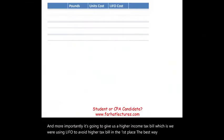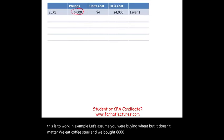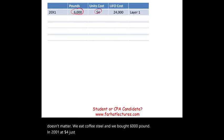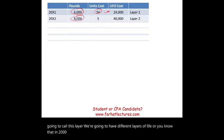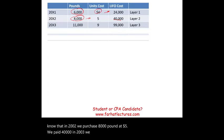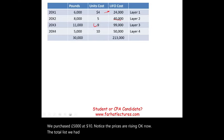The best way to illustrate this is with an example. Let's say we're buying wheat. We bought 6,000 pounds in 2001 at $4, giving a LIFO cost of $24,000 — Layer 1. In 2002, we purchased 8,000 pounds at $5, totaling $40,000. In 2003, 11,000 pounds at $9. In 2004, 5,000 pounds at $10. Notice prices are rising. In total, we have 30,000 pounds at a total cost of $213,000, accumulated without selling more than we bought.